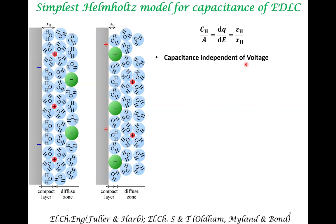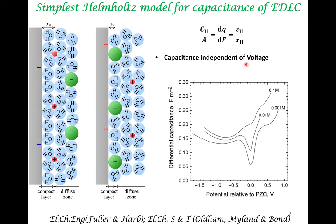In time it became possible to do experiments wherein these capacitances were measured. These are beautiful sets of experiments done in the 50s and 60s that led to a Nobel Prize later on — the dropping mercury electrode by Heyrovsky. We won't go into the details of such experiments, but we will just present the results from one such experiment. What is plotted on the y-axis is the differential capacitance in Farads per meter squared, and the x-axis is the potential with respect to the PZC — point of zero charge — where at zero the electrode has no charge.